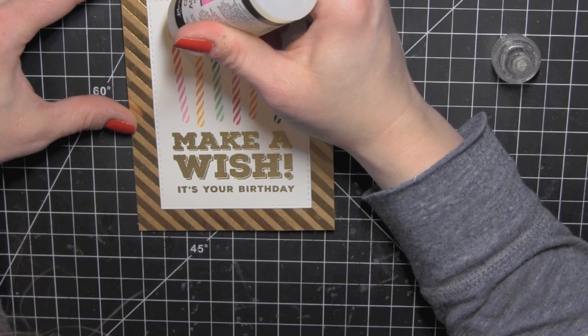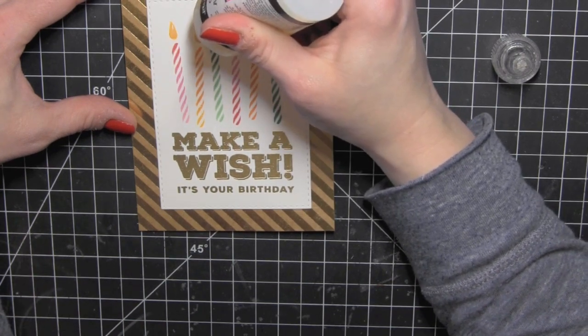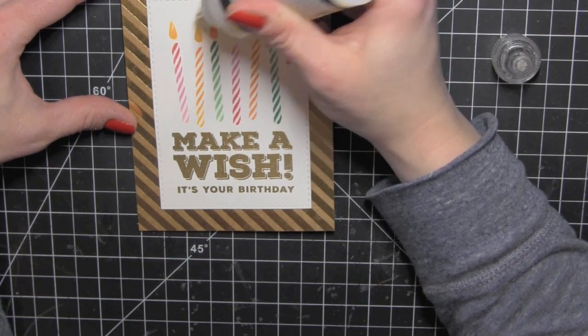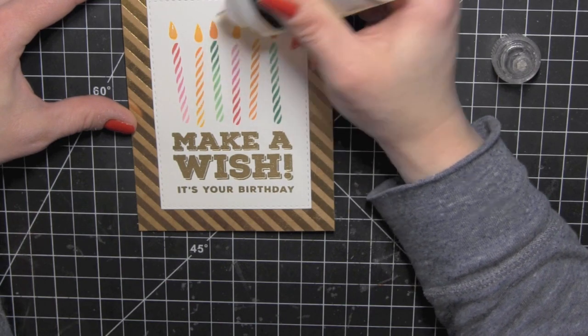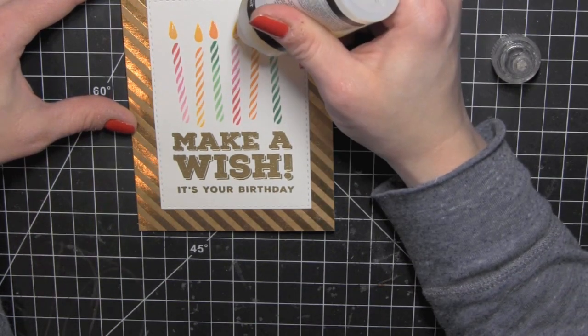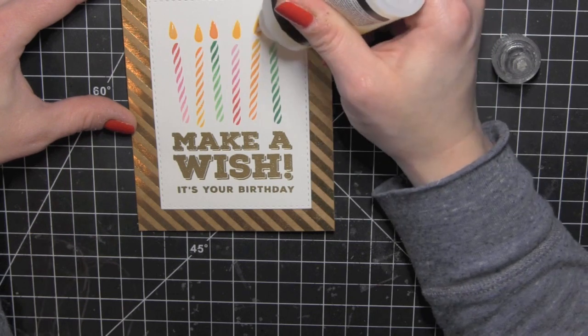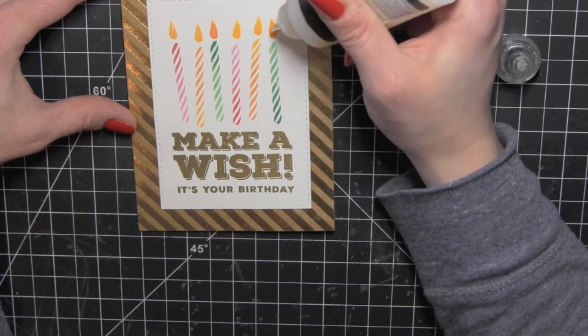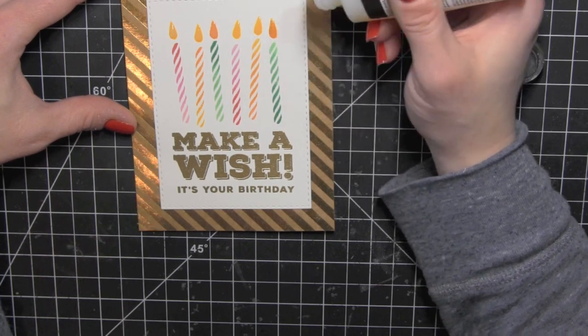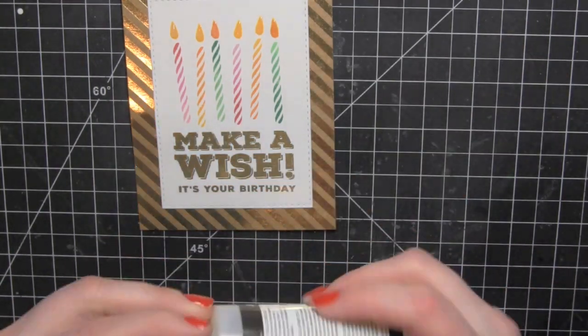Got to get the glossy accents unclogged with a straight pin. Just dabbing it on right where the ink is. Once I have that all applied I'm going to set it aside to dry for a little bit. If I had been thinking I would have waited to adhere the card panel to my card base while that glossy accents was drying because I am going to stamp a greeting on the inside.